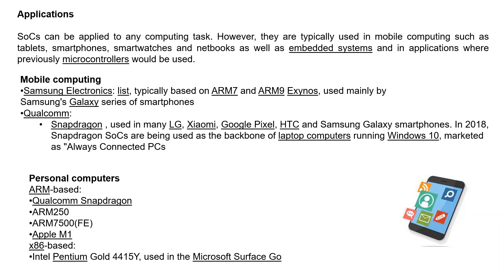So here you can observe for mobile computing, Samsung Electronics is providing a system on chip, and this system on chip is basically based on ARM processors. There is one more company, which is Qualcomm, and here the Snapdragon processor is used. And this SoC is used in many LG, Xiaomi, Google Pixel, etc. smartphones.